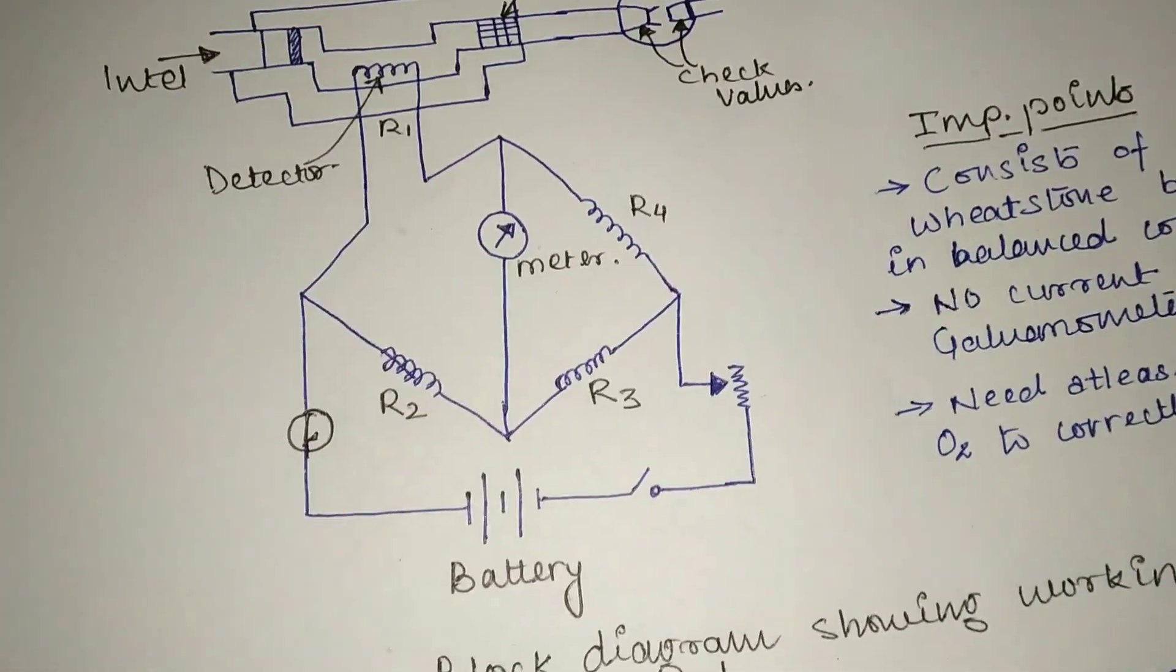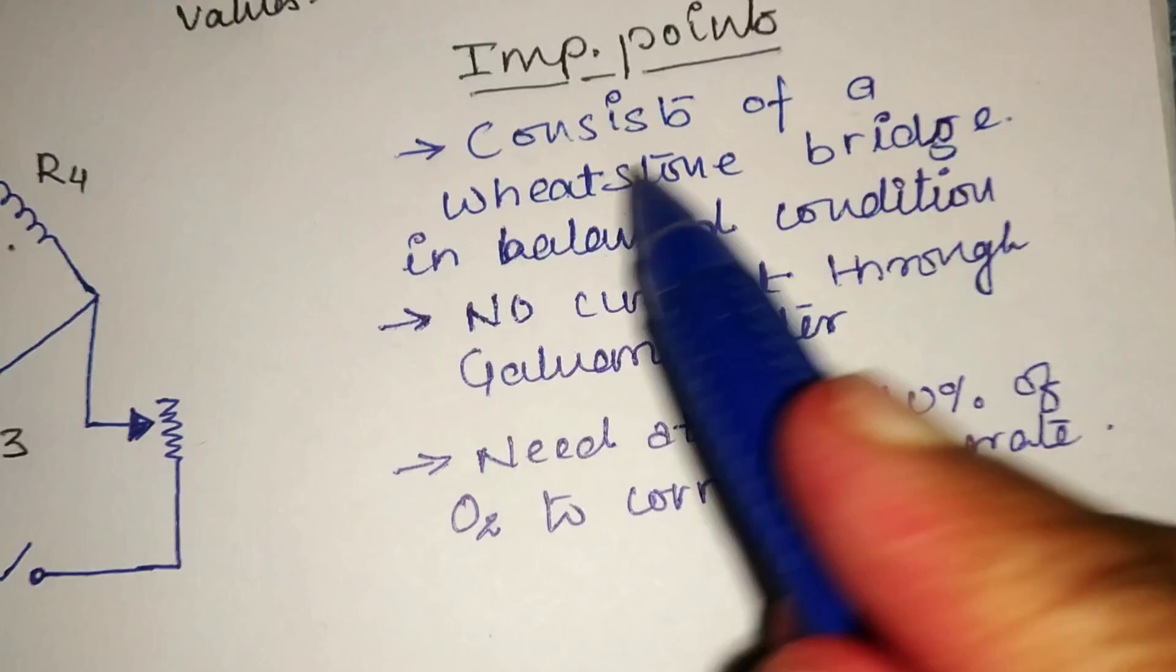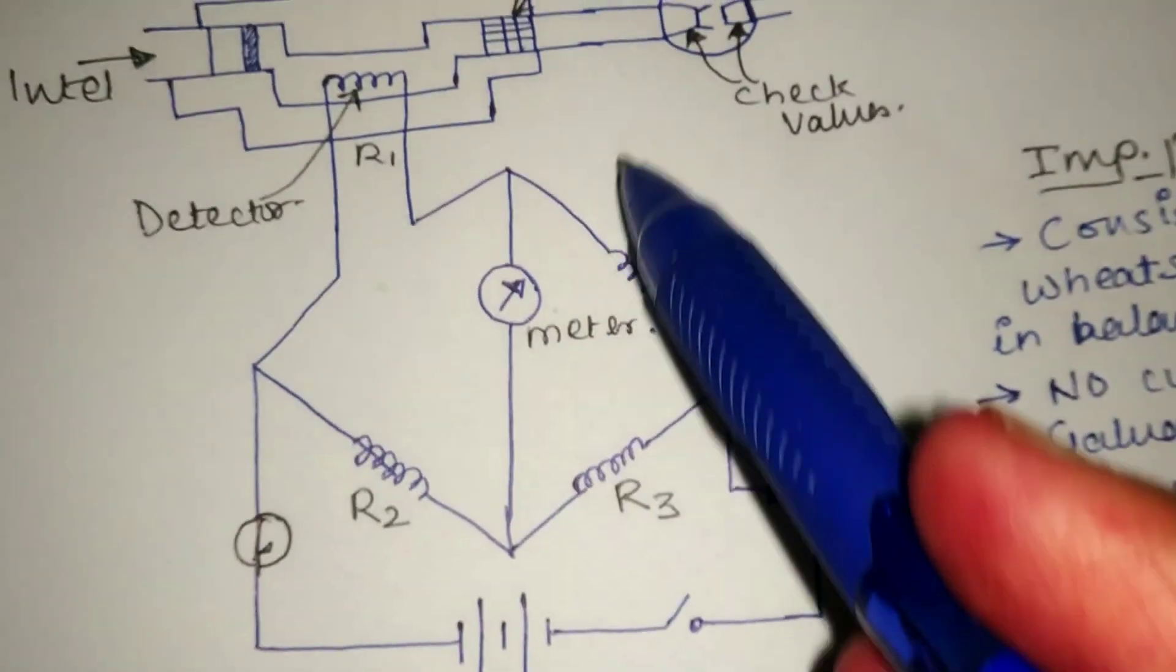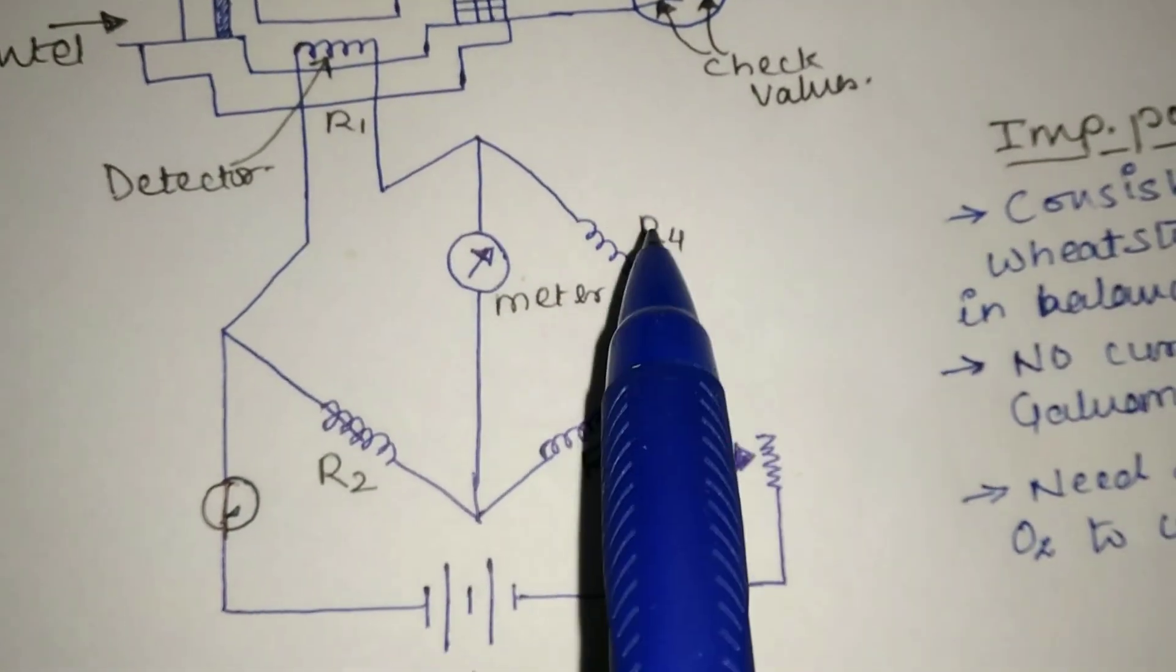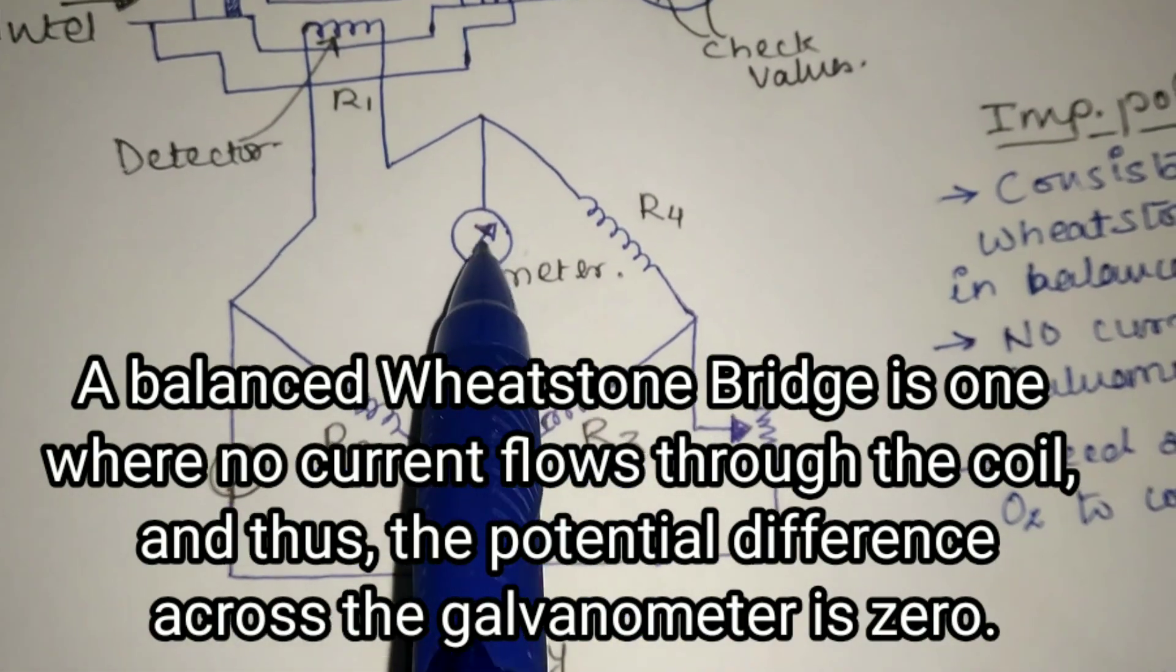Now we will see some important points related to the explosimeter. The explosimeter consists of a Wheatstone bridge. This is the Wheatstone bridge in balanced condition, so no current passes through the galvanometer. The galvanometer shows no reading.